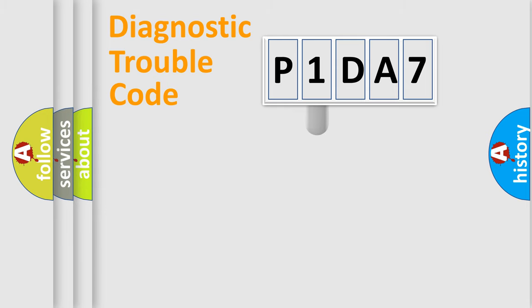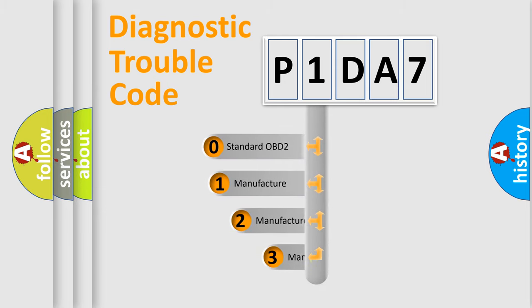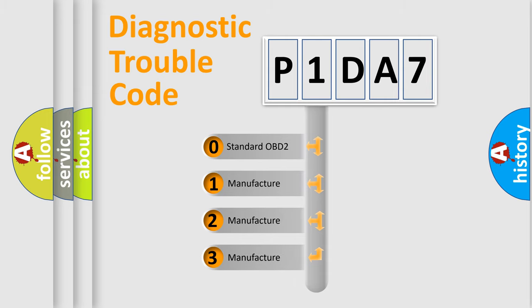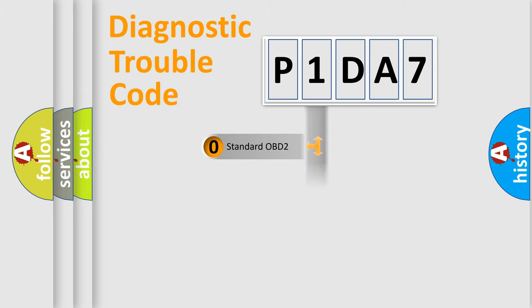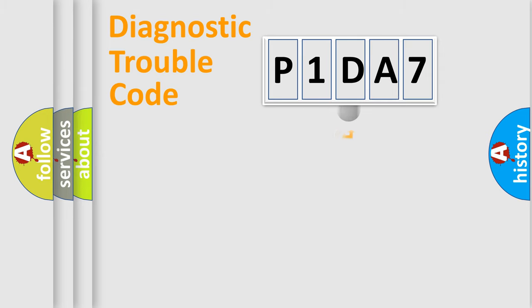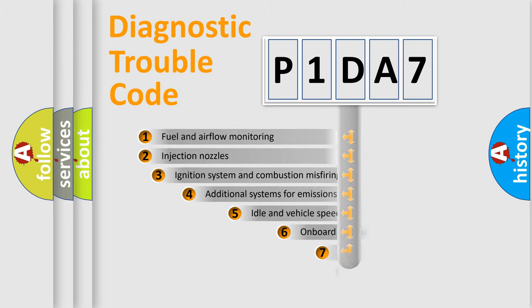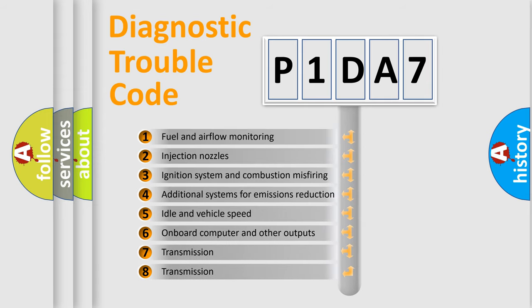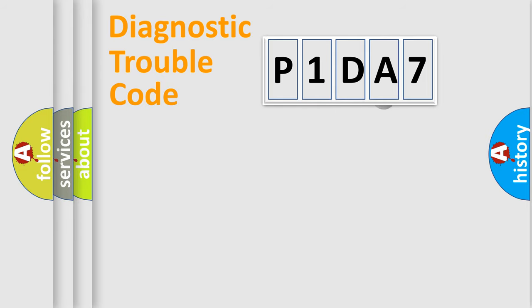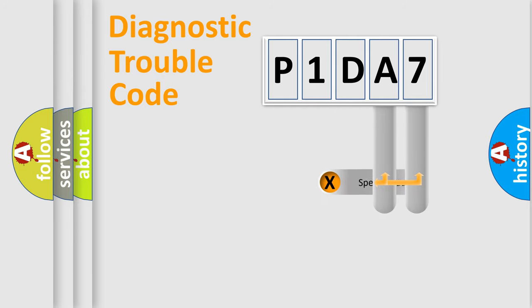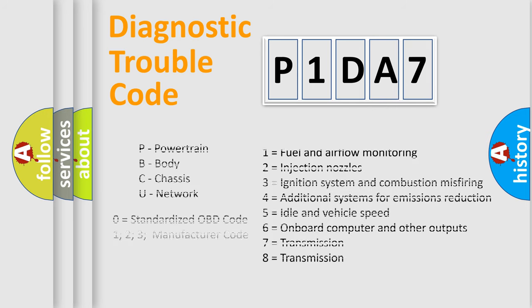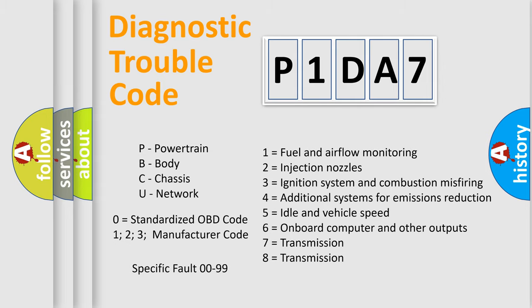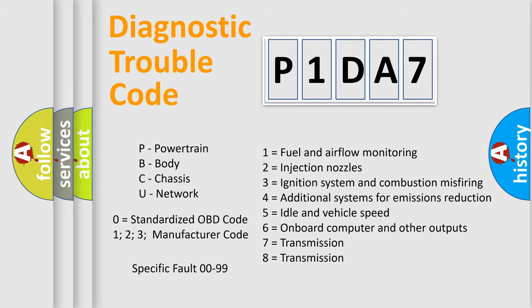This distribution is defined in the first character of the code. If the second character is zero, it is a standardized error. In the case of numbers 1, 2, or 3, it is a manufacturer-specific error expression. The third character specifies a subset of errors. This distribution is valid only for the standardized DTC code, where the last two characters define the specific fault of the group.